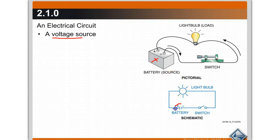And a load. The load in this diagram is the light bulb. In our HVAC equipment, they're going to be motors and compressors.